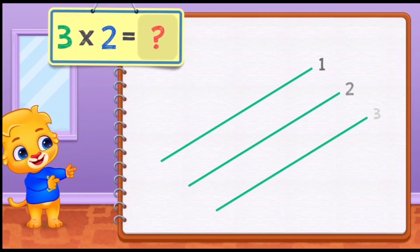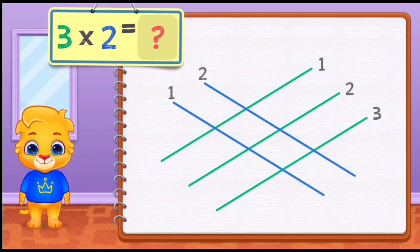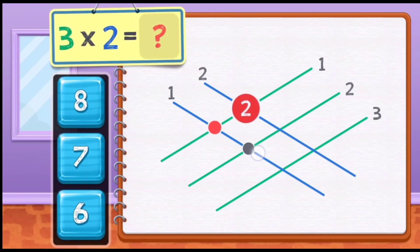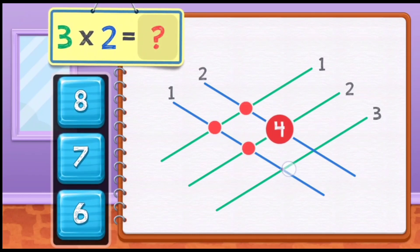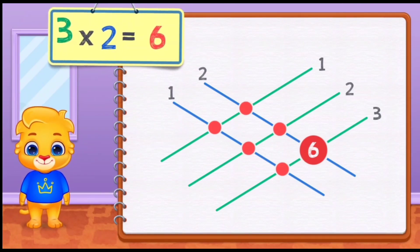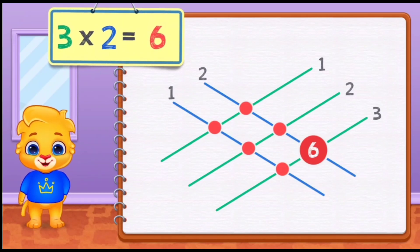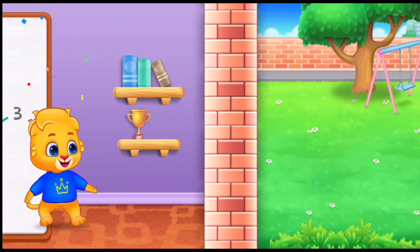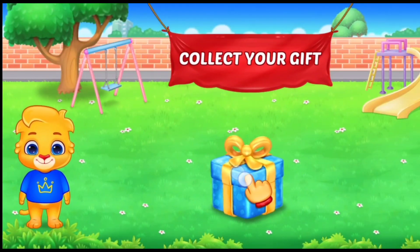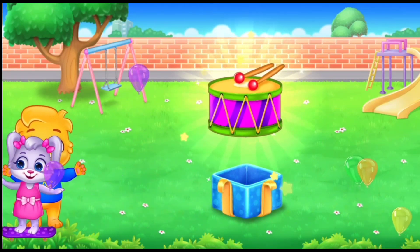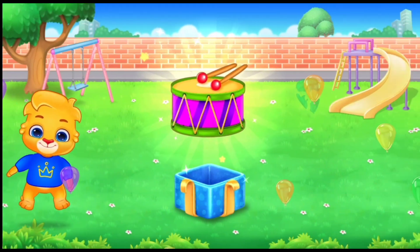Three times two equals: one, two, three, four, five, six. Three times two equals six. Wow! Woo!